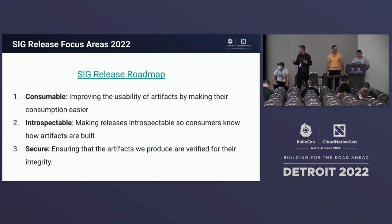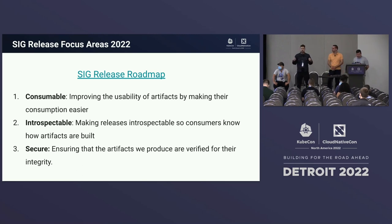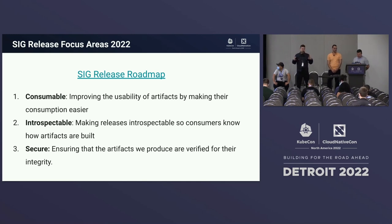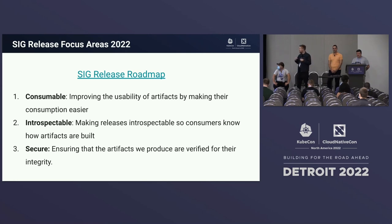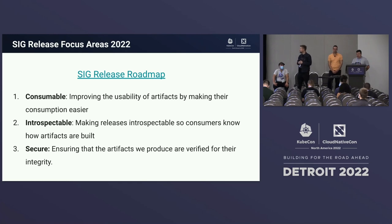This year we've been focusing on three areas in our roadmap — you can also find it on GitHub. We want to make releases more consumable: easier to pull down and get artifacts for. More introspectable: so you can understand what's in each release. And more secure: we want to make sure artifacts are non-falsifiable, that they have signatures and software bill of materials, so you have a better way to judge the risk of consuming those artifacts and know what you're deploying.